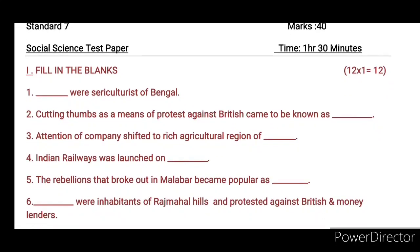Sixth one: dash — worthy inhabitants of Rajmahal Hills who protested against the British and moneylenders. Question relates to the people of Rajmahal Hills and their resistance against the British, who came to be known as a particular group or party.